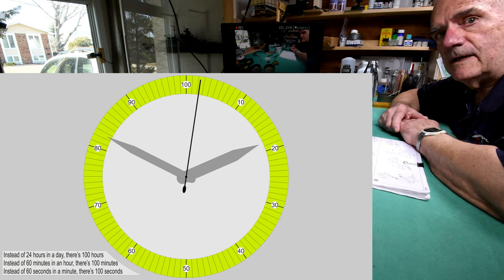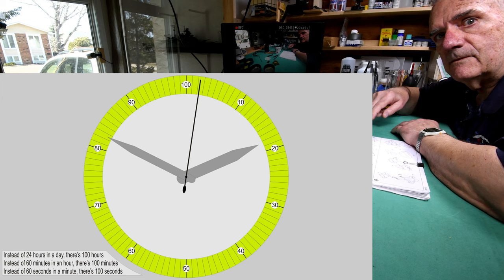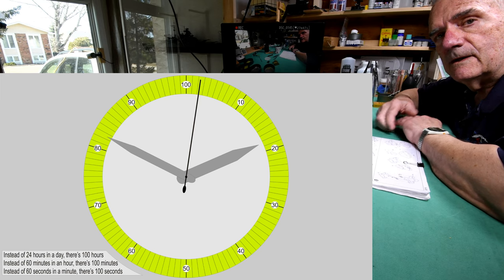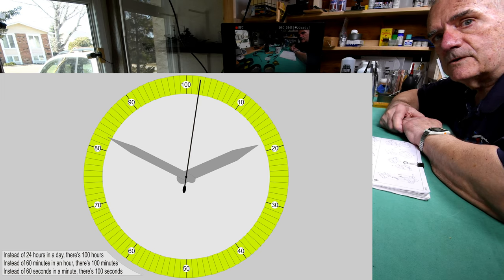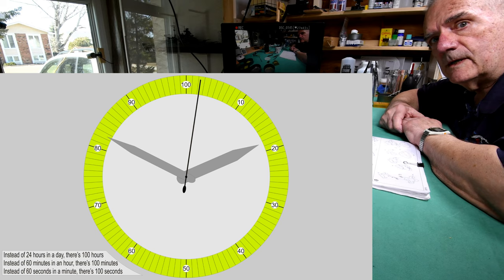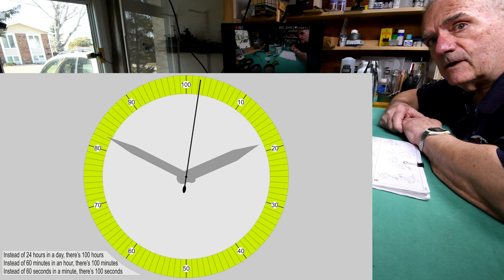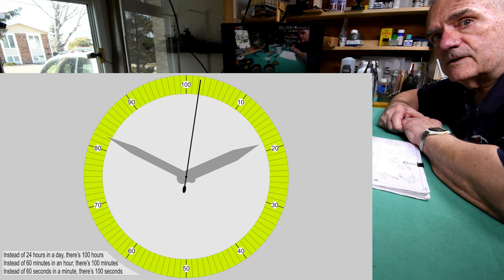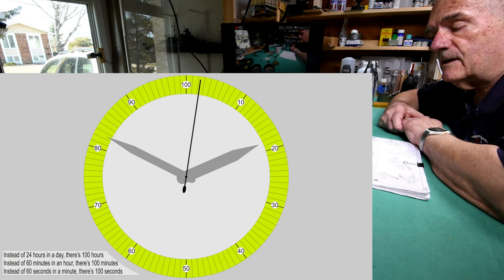There would be 100 hours in a day. Instead of a 24-hour clock, we'd have a 100-hour clock. There would be 100 hours, or pardon me, there would be 100 minutes in an hour and 100 seconds in a minute.